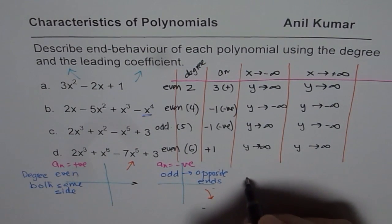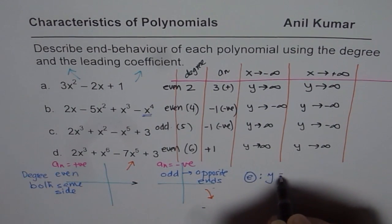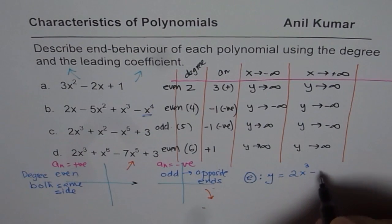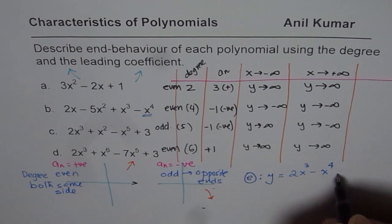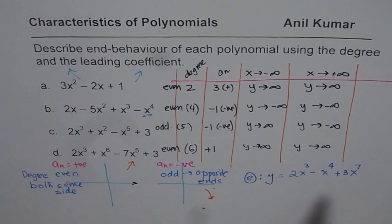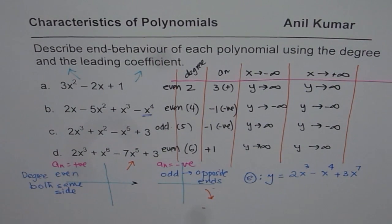Here is a test question for you. Given the function y = 2x³ - x⁴ + 3x⁷, can you write down the end behavior for this particular function? Thank you and all the best.